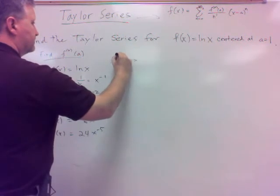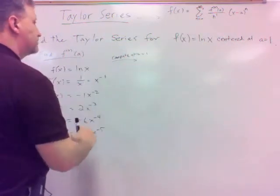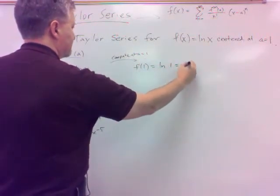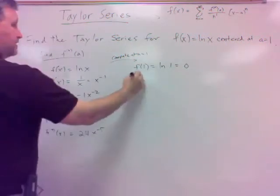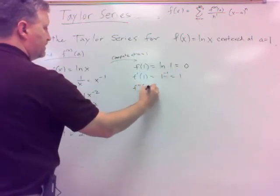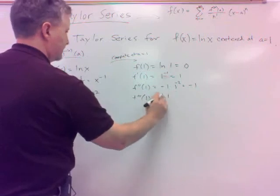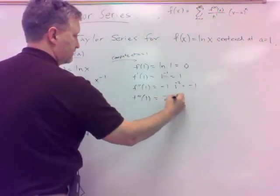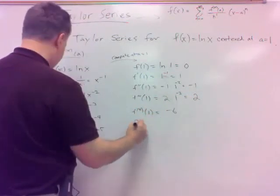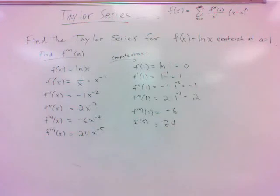So now compute these at a equals 1, because that's where we want to center. f of 1 would be ln of 1 — that's zero, isn't it? f prime at 1 would be x to the minus 1, which is 1. Second derivative at 1 is negative 1 times 1 to the negative 2, which is negative 1. Third derivative would be 2 times 1 to the negative 3, which is 2. And it would be negative 6 and 24 because 1 to the negative 5 is 1.